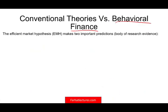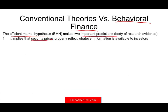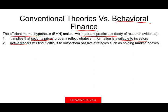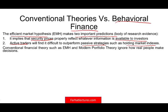Let's start by looking at the conventional theories. The efficient market hypothesis is a conventional theory, and it makes two important predictions: security prices reflect all information available to investors, and active traders will find it difficult to outperform passive strategies such as holding market indexes. This conventional theory, along with modern portfolio theory, ignores how people make decisions — they assume that people are rational.